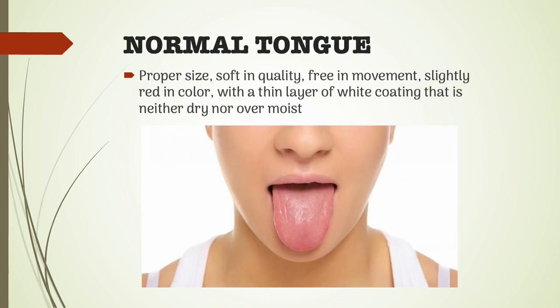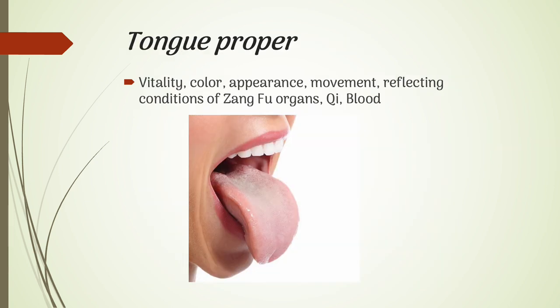Normal tongue is of proper size, soft in quality, free in movement, slightly red in color or pale red, and with a thin layer of white coating that is neither dry nor over moist.